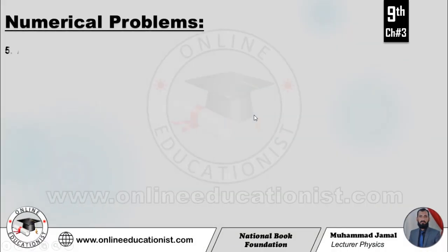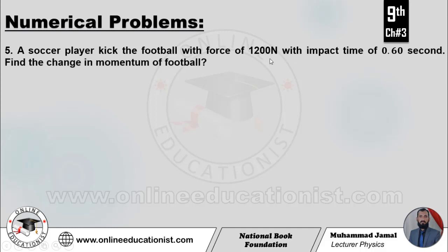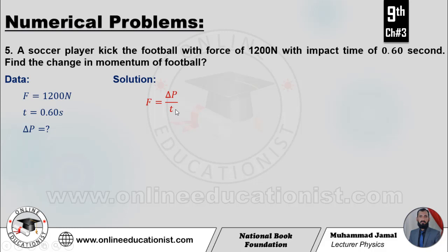Problem number 5. A soccer player kicks the football with force of 1200 newton. Ek soccer player hai aur wo football ko kick karta hai 1200 newton ki force se. Impact time 0.60 second hai. Change in momentum calculate karna hai. Data mein force given hai aur impact time t equal to 0.60 second hai. Delta P calculate karna hai. Toh delta P equal aa jaata hai F into t, yaniki 1200 into 0.60 equal to 720 newton second.